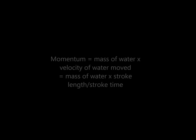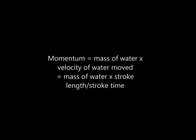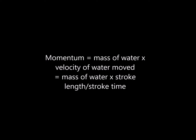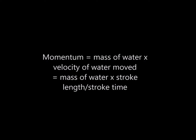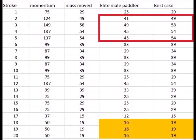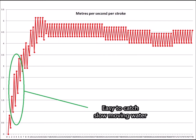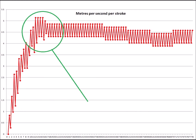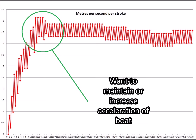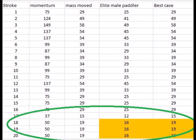The momentum of water used to propel the boat is equal to the mass of water moved times the velocity of the water moved. If you move water faster you will have more momentum than if you moved the water slower. You can catch less water and move through your stroke length quickly, or you can catch more water and complete your stroke length slower. It's easy to catch and move slow-moving water, but what we really want is to be able to move fast-moving water so we can accelerate to higher speeds. Can we catch more water, or can we move the water faster?